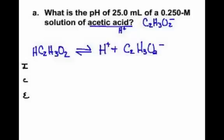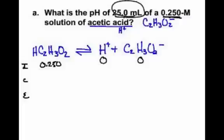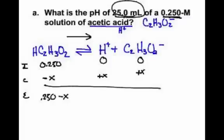ICE tables have resurfaced. I have 25 mL of a 0.25 molar solution — the 25 mL is a distractor. So initial acetic acid is 0.250, hydrogen is zero, acetate is zero. Since hydrogen is zero, the reaction shifts right: minus X, plus X, plus X. Equilibrium values are 0.250 minus X, X, and X. We need the Ka value to solve this problem.